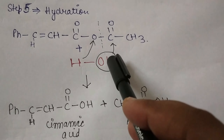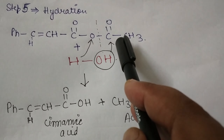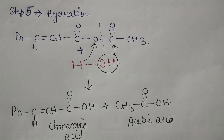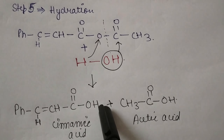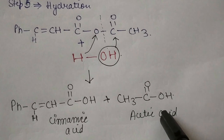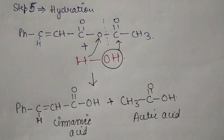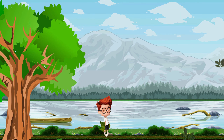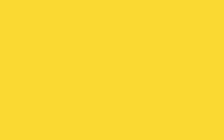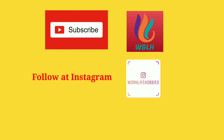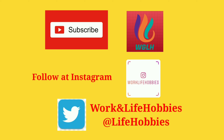Step 5 is the hydrolysis process, in which a water molecule is introduced. The intermediate structure and water split into two portions: H goes to the C=O side forming the COOH group of cinnamic acid, and OH goes to the other side with C=O of CH₃, forming acetic acid. So the products of the Perkin condensation reaction are cinnamic acid and acetic acid.